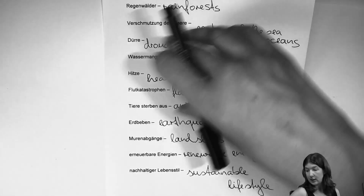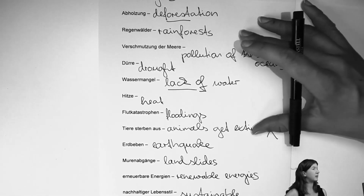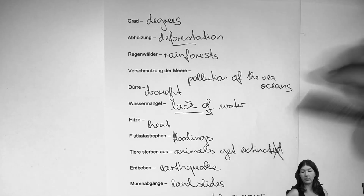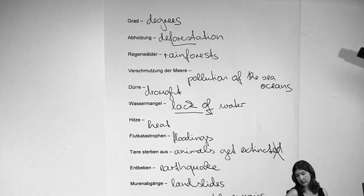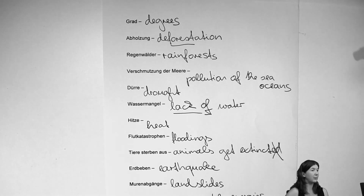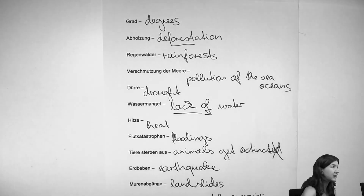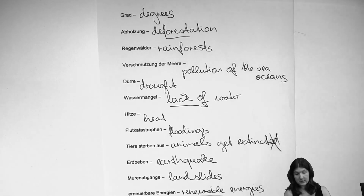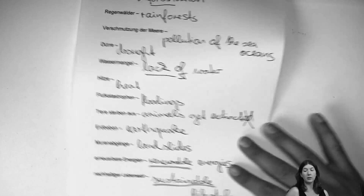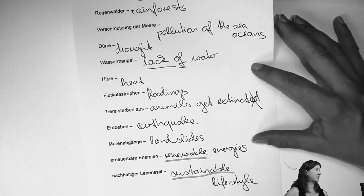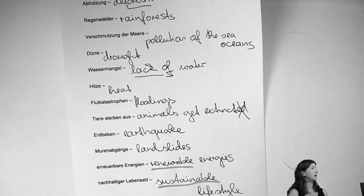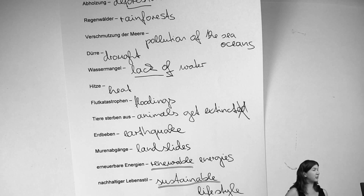So much for the vocabulary. Let's have a look at the words again: deforestation, rainforests, lack of water — the word 'lack' is important and can be used for pretty much anything, it's not topic-specific. Animals that get extinct — not 'extincted.' Earthquakes. Renewable and sustainable are definitely words you should remember for oral exams — they're pretty important.